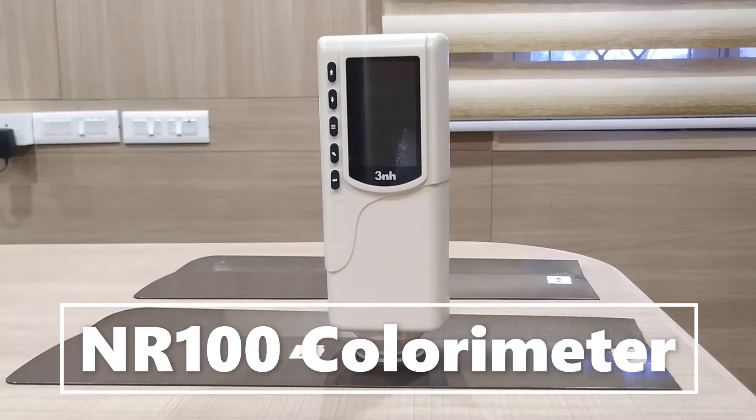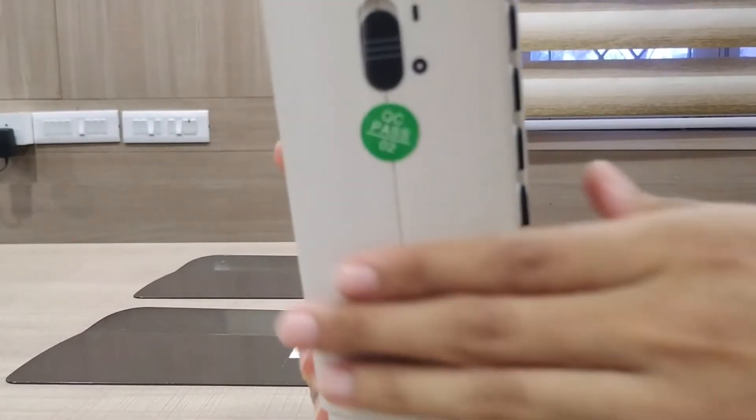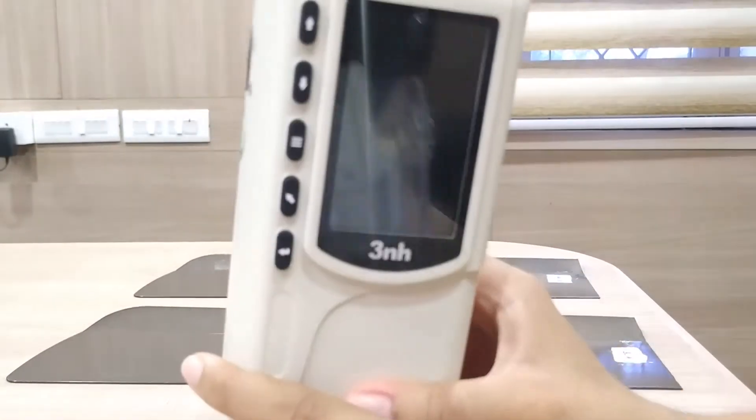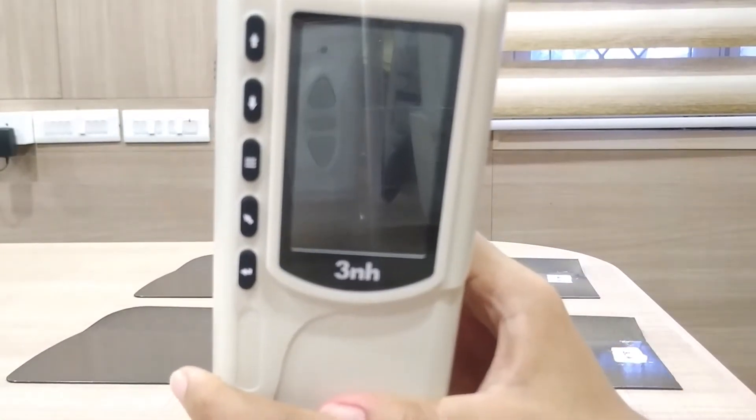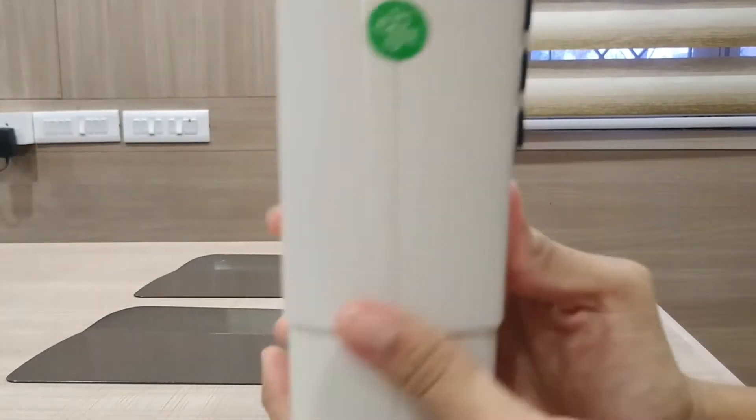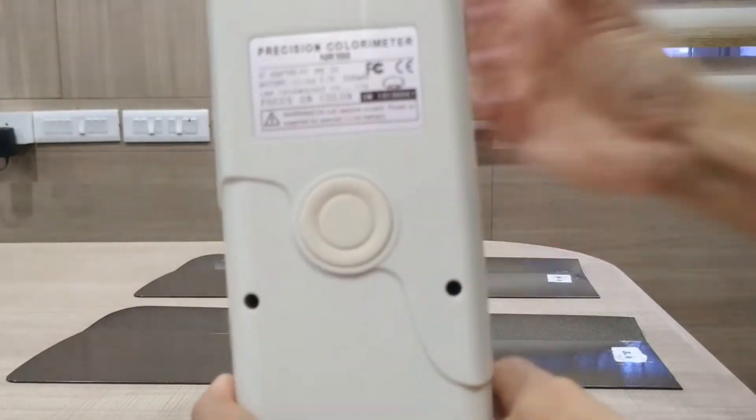This is NR100 colorimeter by 3NH. I'm going to switch it on. In this instrument you can measure color by pressing on this button at the back.